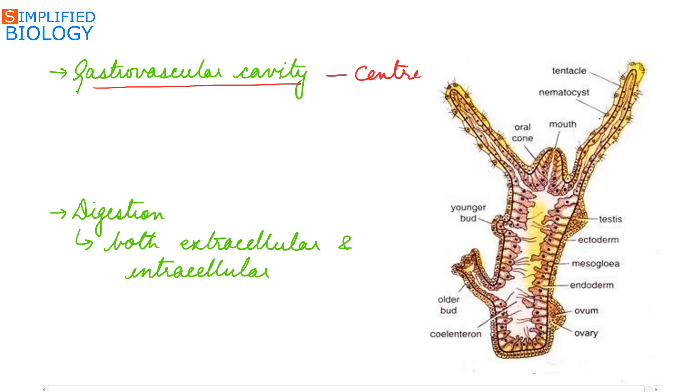Present inner to the body wall at the center is a gastrovascular cavity which has a single opening called as hypostome or the mouth. This gastrovascular body cavity with a single opening is known as coelenteron, hence the name Coelenterata.